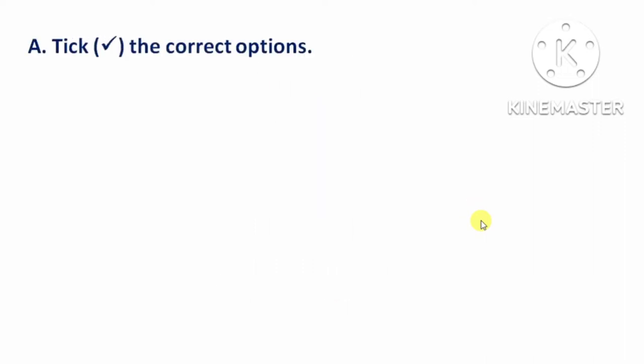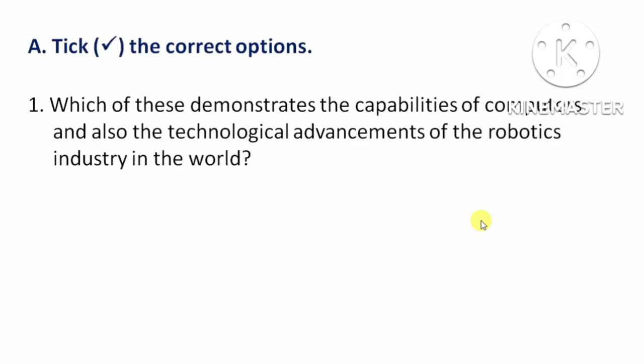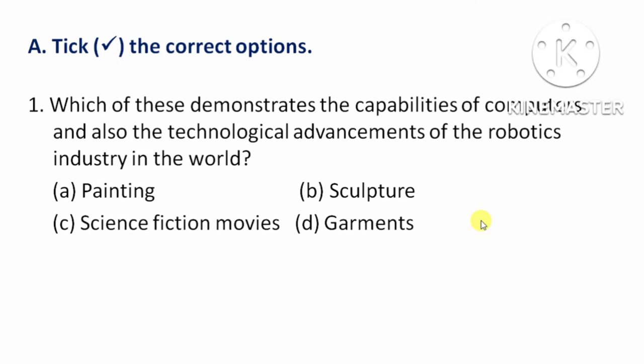Tick the correct option. First question: which of these demonstrates the capabilities of computers and also the technological advancement of the robotics industry in the world? In which world is the robotic industry's technological advancement and computer development shown? Option A: Painting. Option B: Sculptor. Option C: Science Fiction Movies. Option D: Garments. The right answer is Option C, Science Fiction Movies.